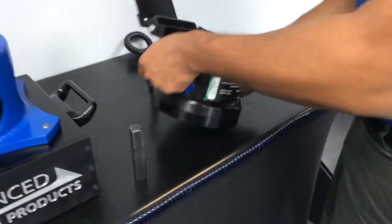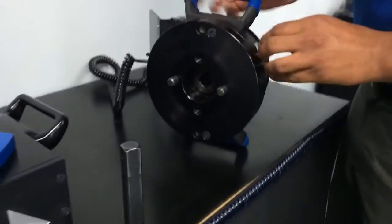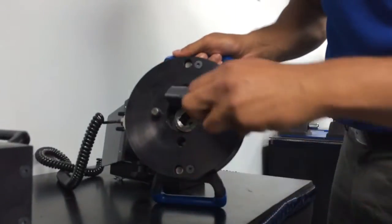Secure the drive bar into the bottom of the multiplier. Be sure the drive bar is fully engaged before continuing.